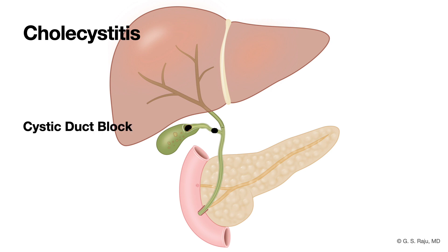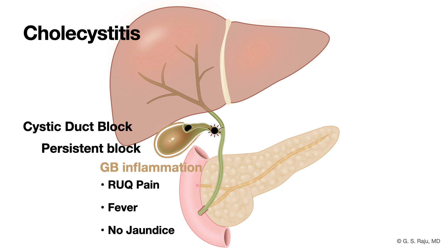Cholecystitis — inflammation of the gallbladder — usually happens when a gallstone gets firmly lodged in the cystic duct. It's a persistent blockage. Bile can't get out, the gallbladder gets inflamed, it can swell with fluid, get infected, and in really bad cases the tissue can become gangrenous. Much more prolonged, severe pain than colic, often with fever. Importantly though, because the blockage is usually just the cystic duct, the common bile duct is still open — so bile can still drain from the liver, and typically there's no jaundice.